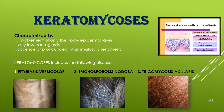We will talk about keratomycosis. It is located in the epidermis of the skin, in the horny layer — the stratum corneum — and for this reason it is also called a superficial disease. It has very low contagiosity and no pronounced inflammatory phenomena. It is divided into different forms: pityriasis versicolor, trichosporosis nodosa, and trichomycosis axillares.